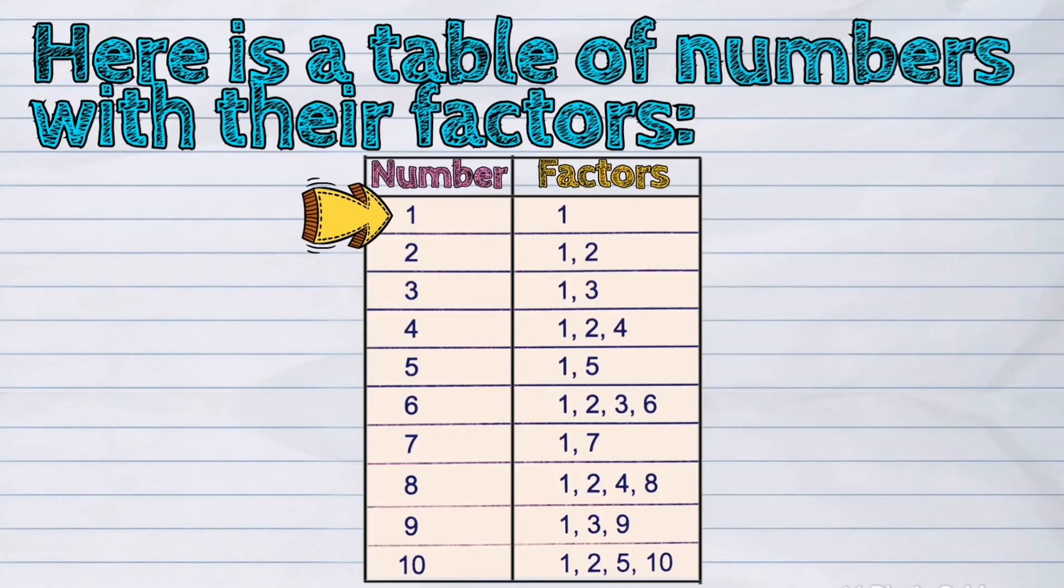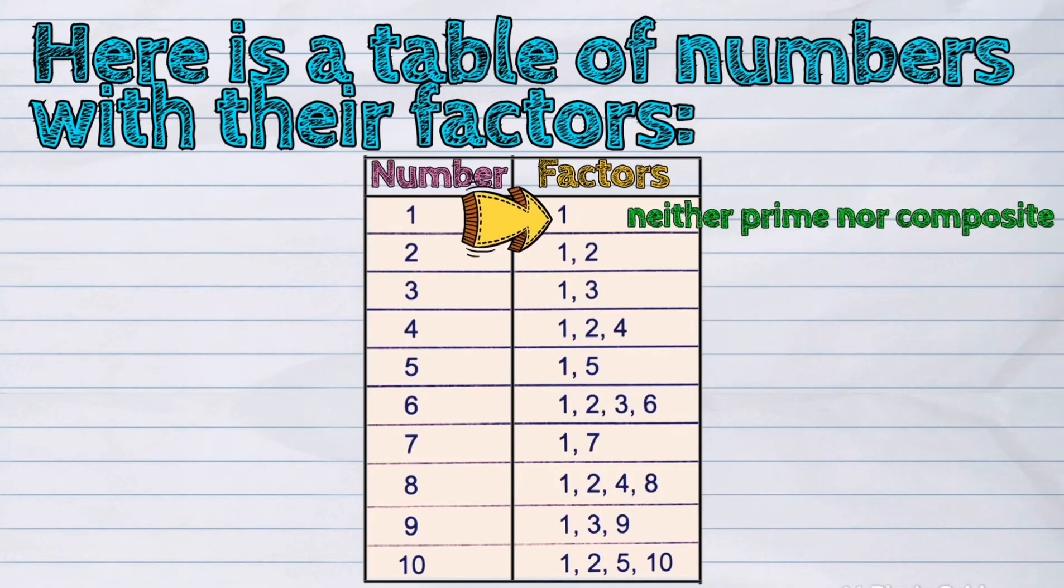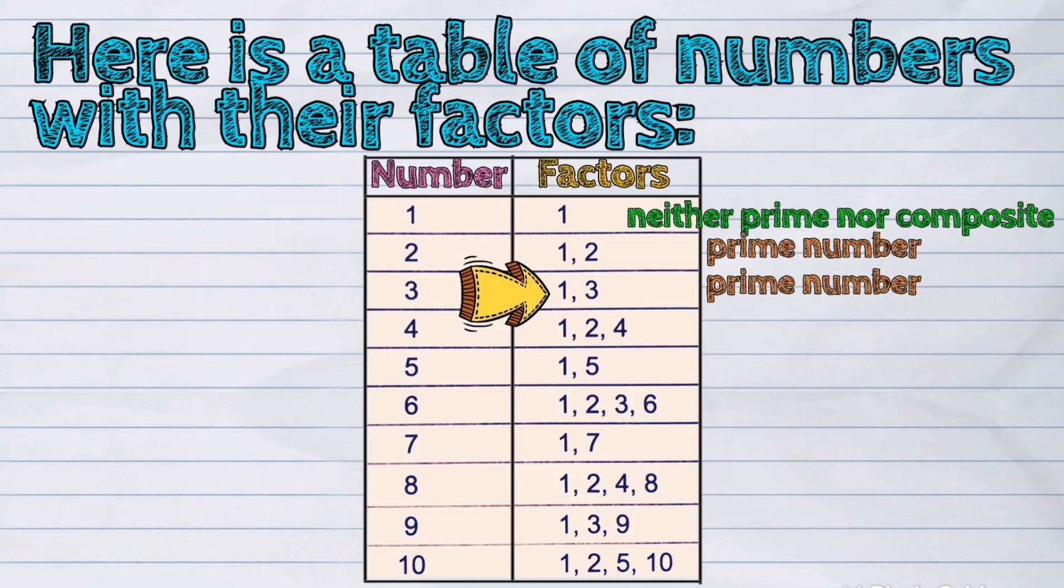one is neither prime nor composite because it only has one factor. Two has two factors, one and two, so it means it is a prime number. Three also has two factors, one and three, so it is a prime number. Four has three factors. It means four is equal to one times four and two times two. Therefore, four is a composite number.